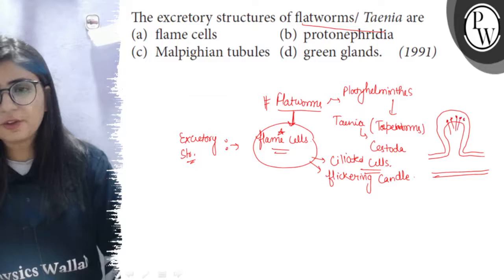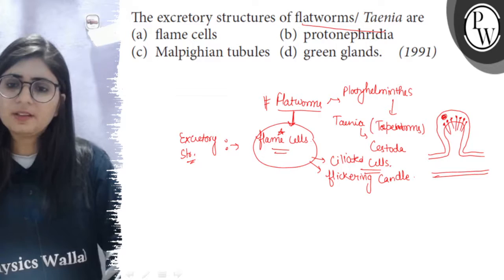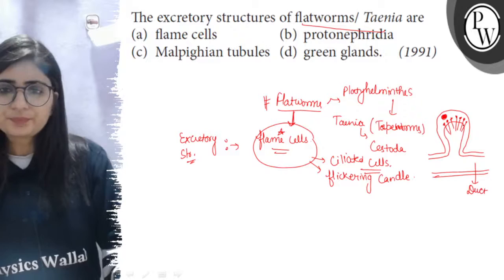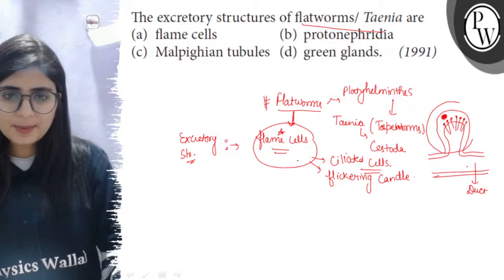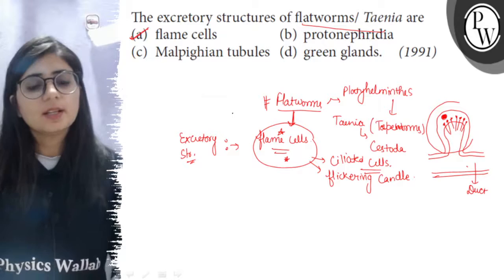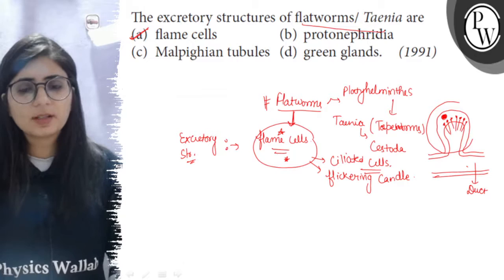So this is the structure of a flame cell. At the end there is a tuft of cilia, so these cilia beat in such a way that they appear like the flicker of a candle. This is nucleus and this is duct. So a flame cell along with the duct is called protonephridia, but here the special name of the cells is asked. So the option will be flame cells. So the excretion in flatworms or Taenia occurs through flame cells.